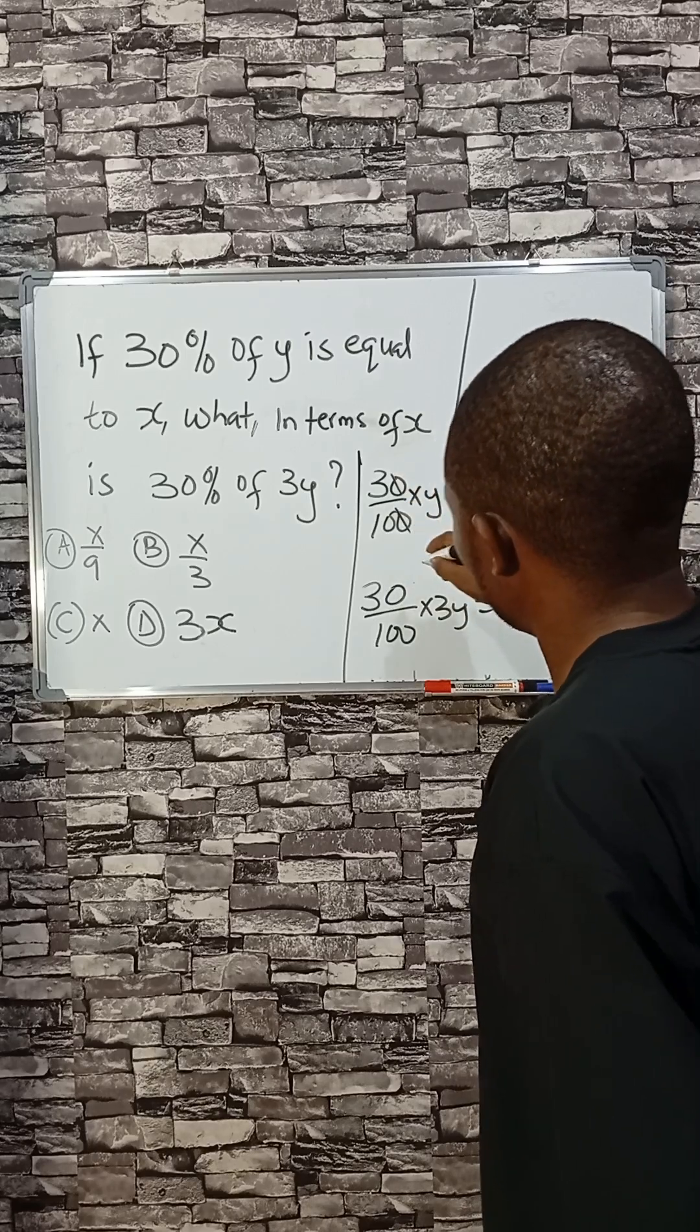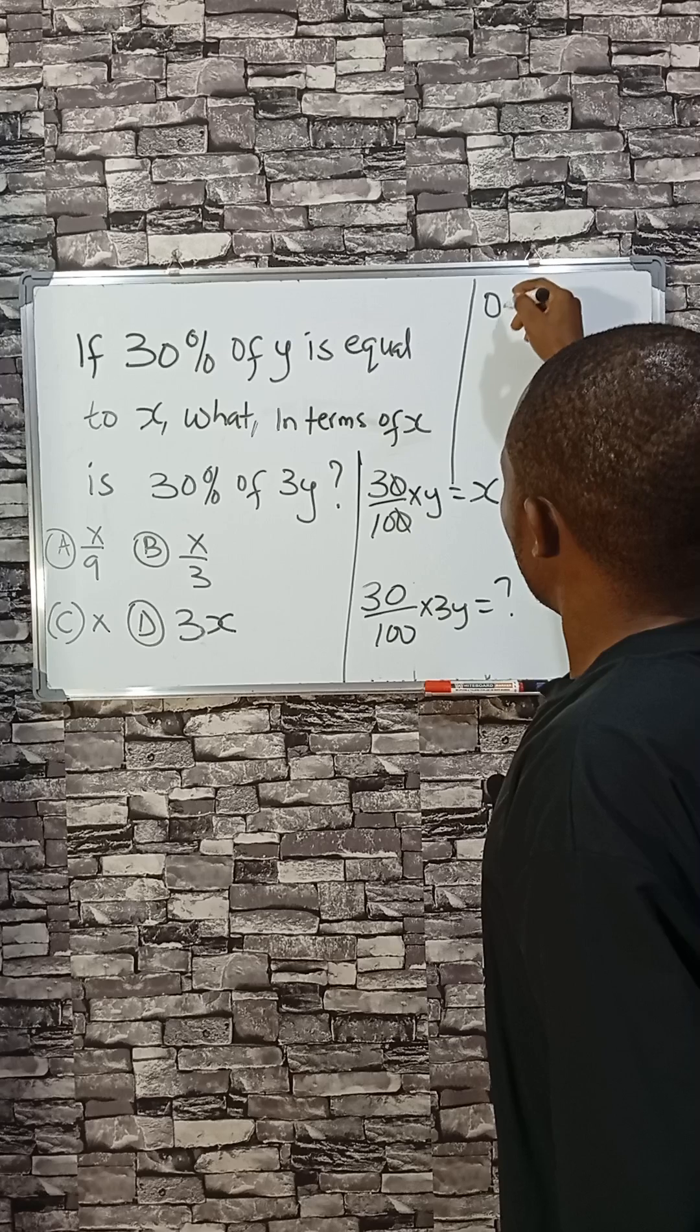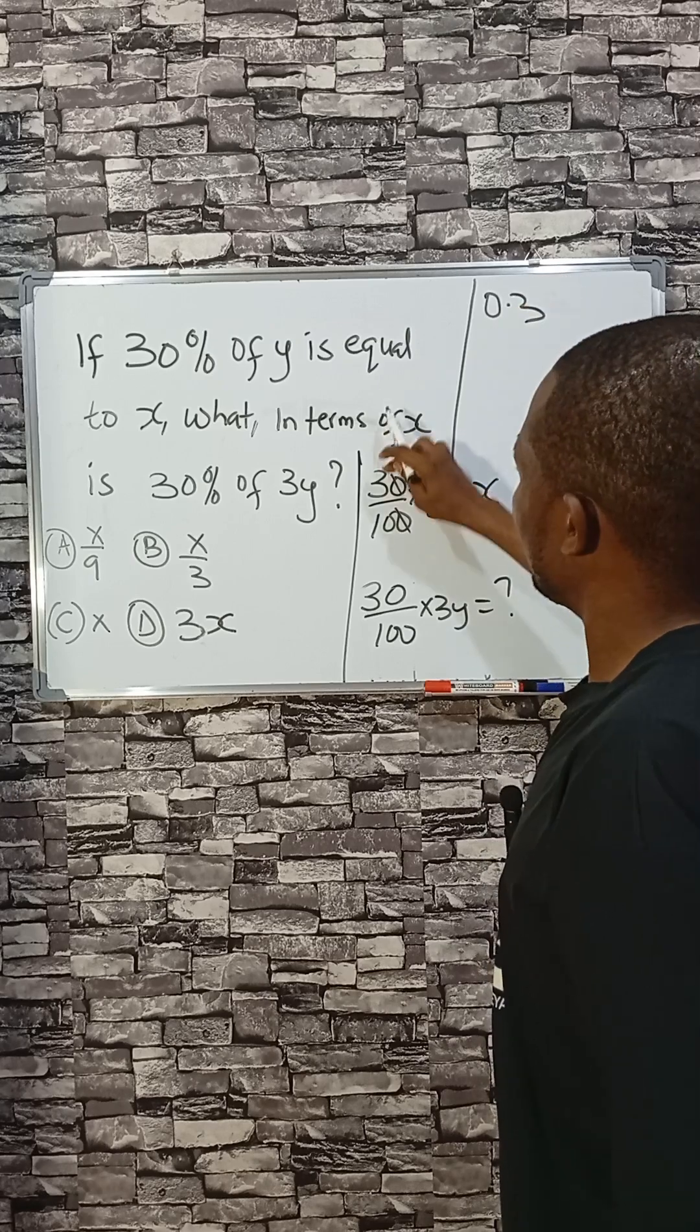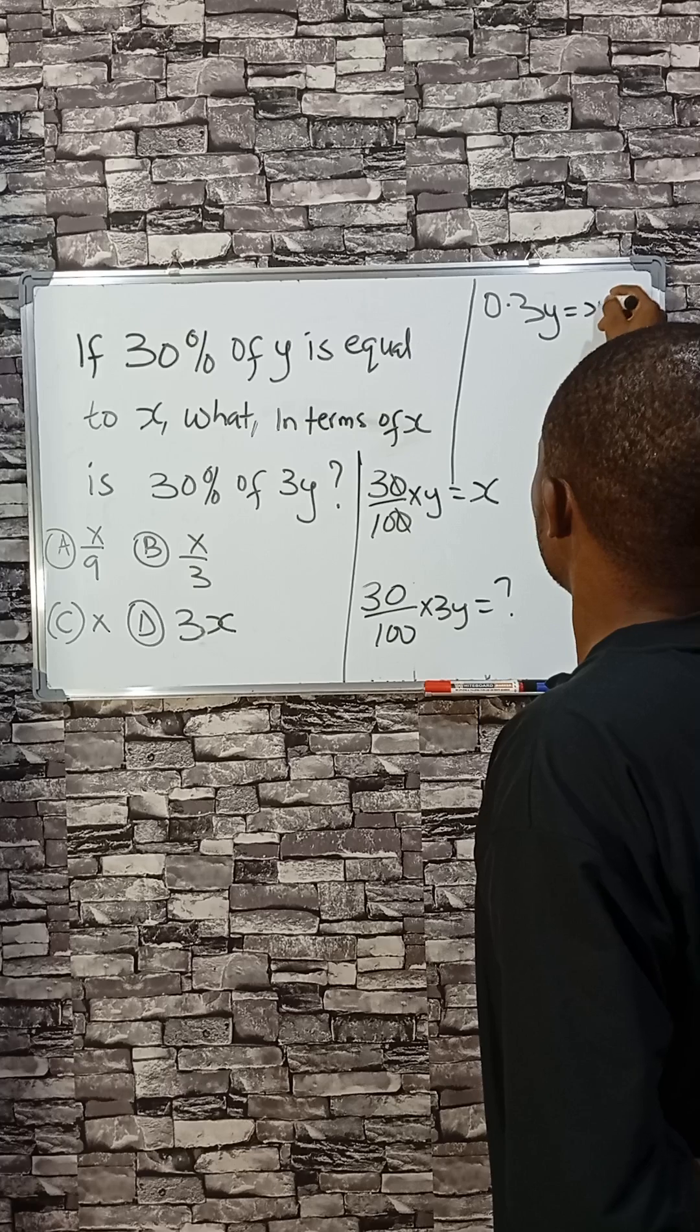This and this will go, giving us 0.3, that's 3 divided by 10, 0.3y, and it's equal to x.